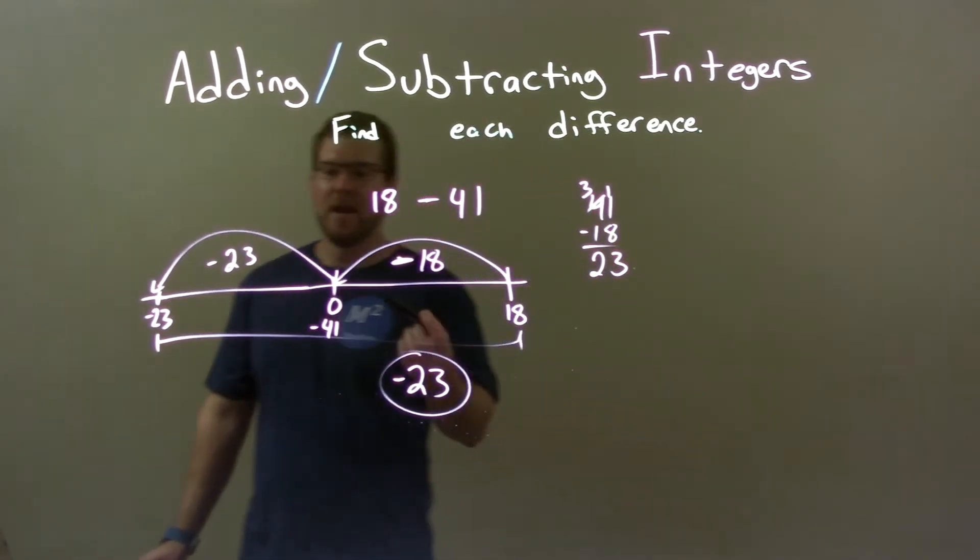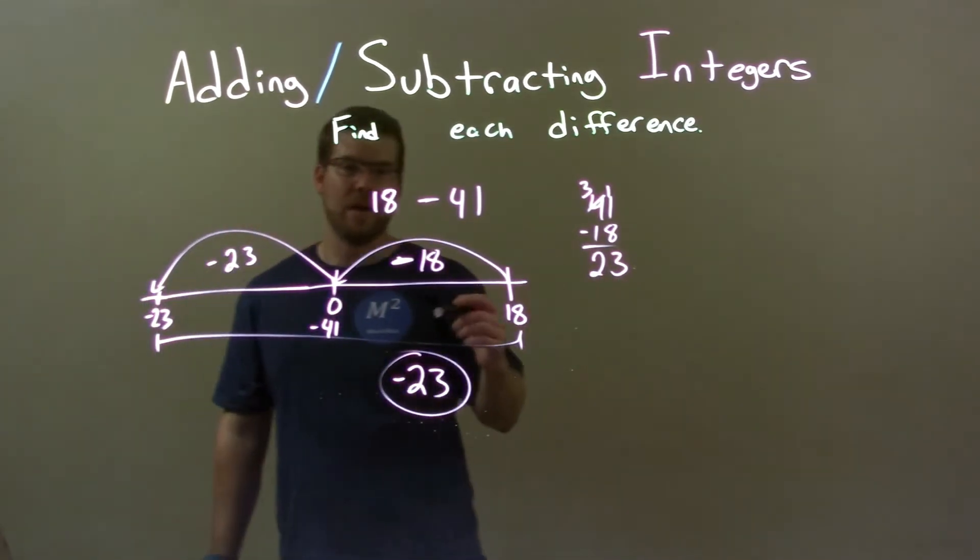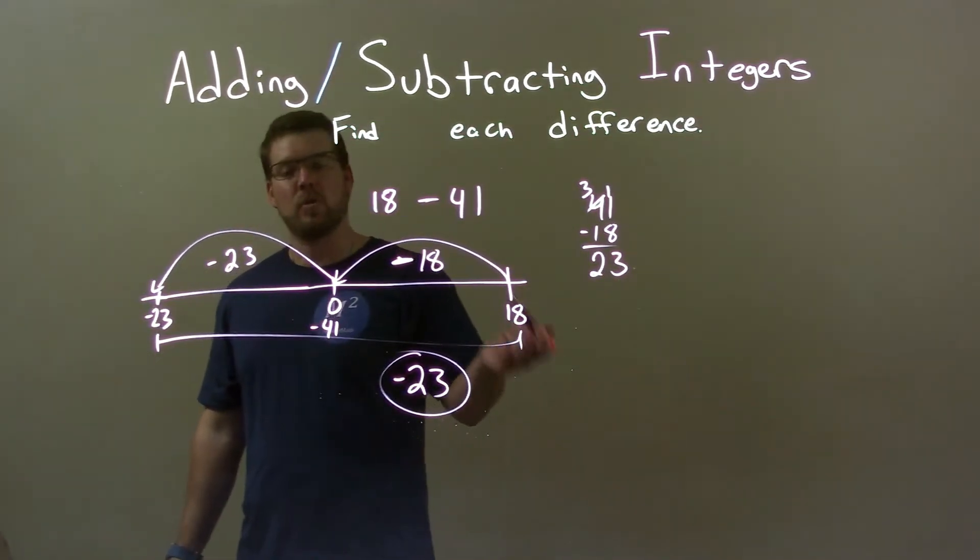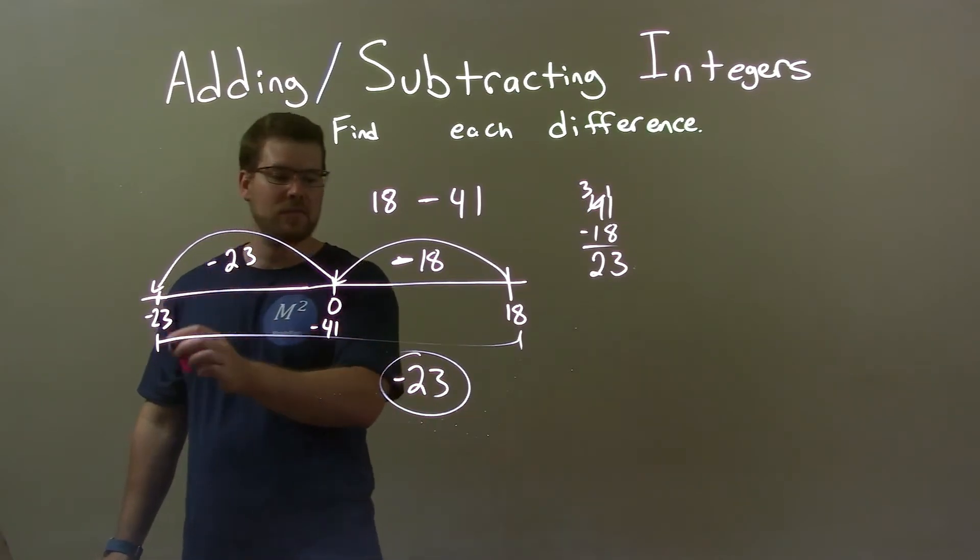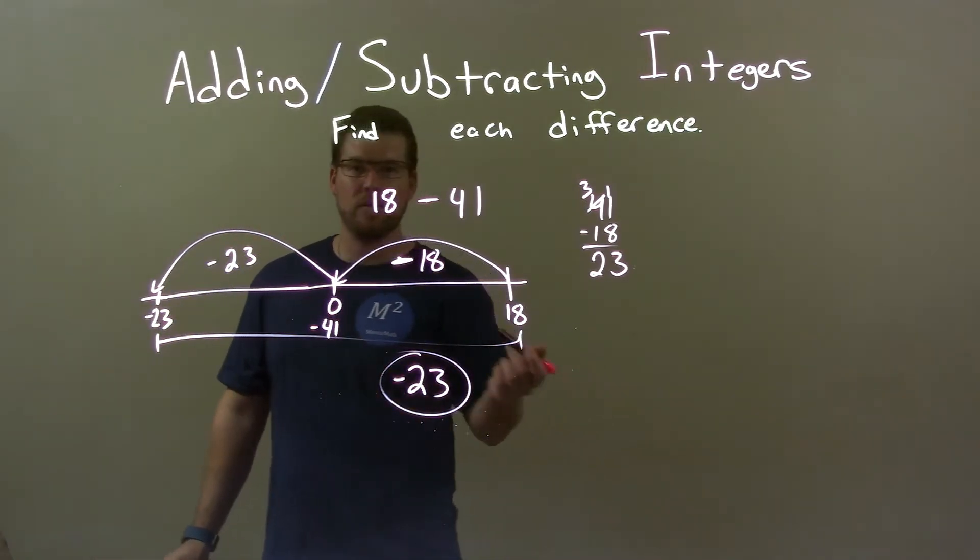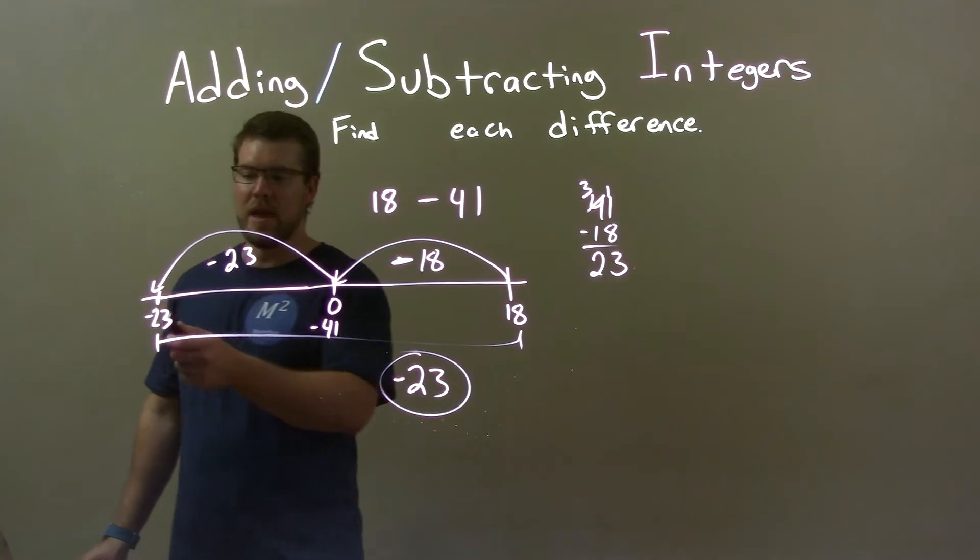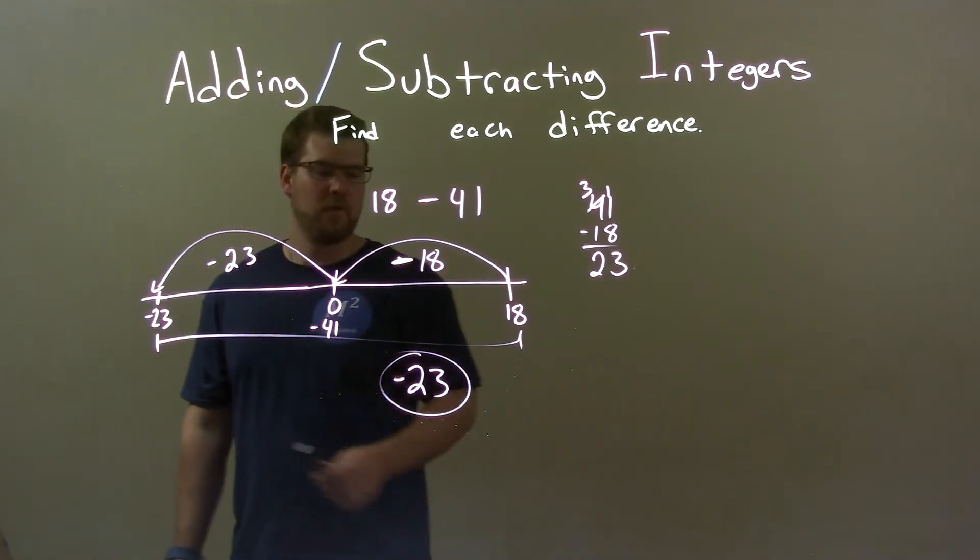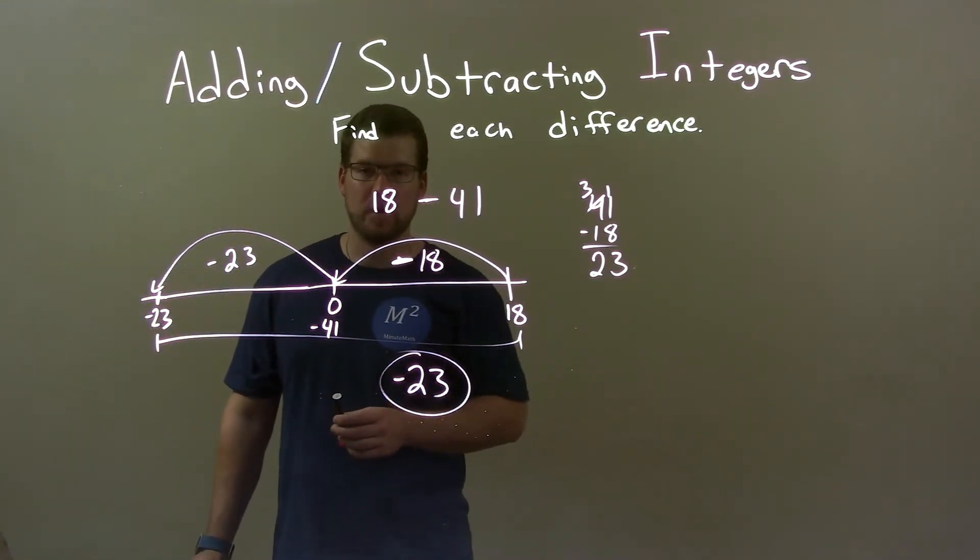Then I go another 23 to the left. And we have to move a total of 41. I do another 23 units to the left, giving us a total of 41 units to the left, being subtraction. And we end up at negative 23. And so, our final answer here is just negative 23.